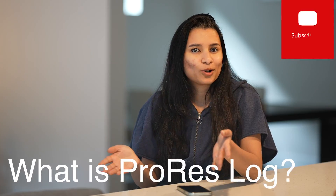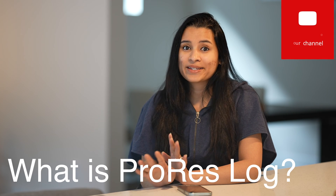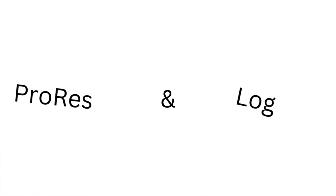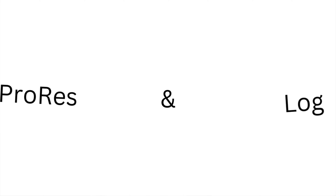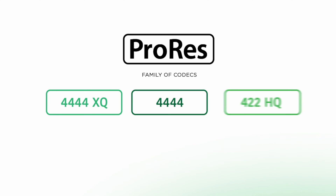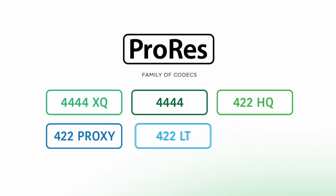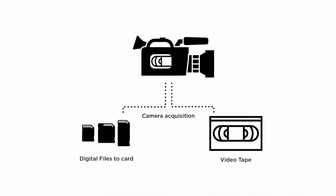First, what is ProRes Log? There are two things to understand here: ProRes and Log. ProRes is a video codec — in simpler terms, how a video file is stored while recording. To keep the file size small, video frames get compressed and stored for simpler storage.